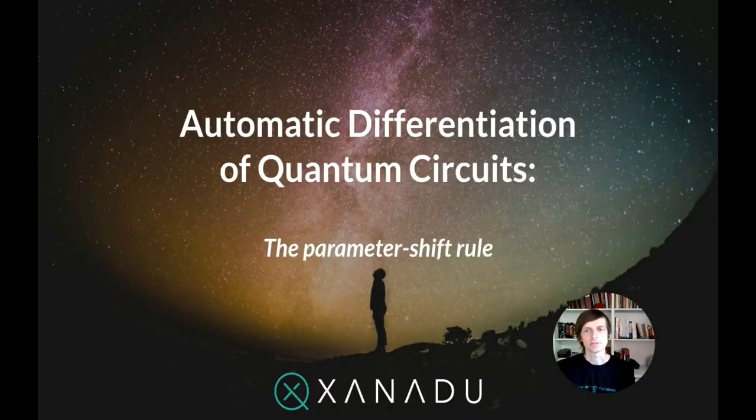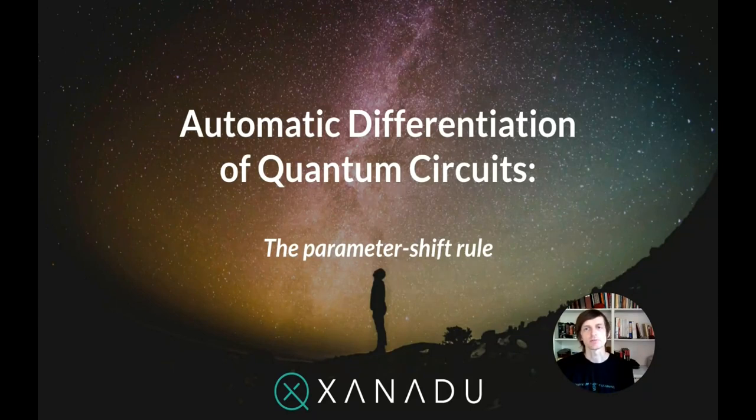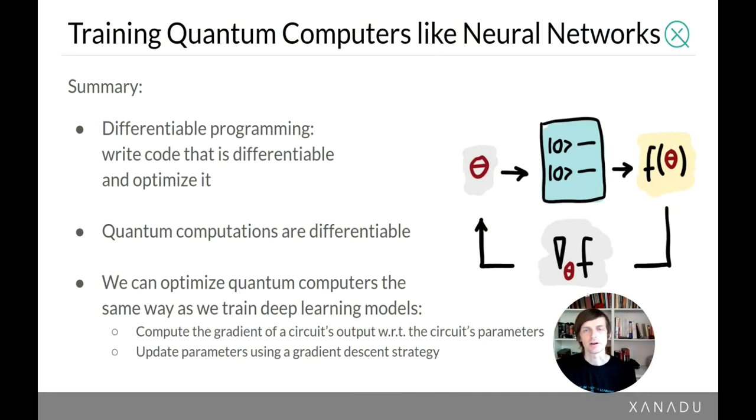Let's explore how we can compute the gradients of quantum circuits automatically using the parameter shift rule. So as a summary of the story so far, there's this idea of differentiable programming where we want to write code which is numerical in nature and differentiable in nature and then optimize it towards some particular goal.